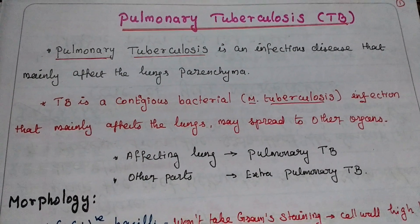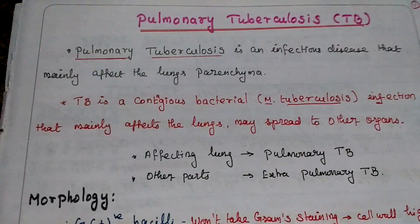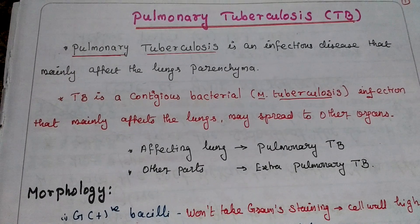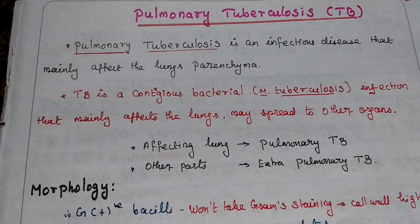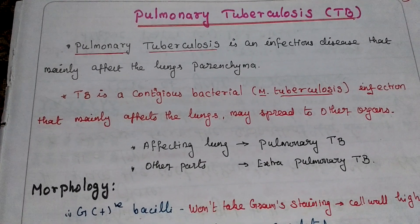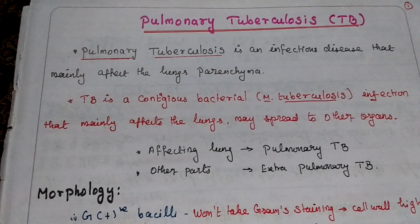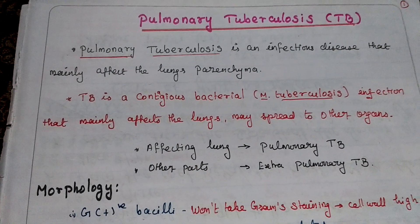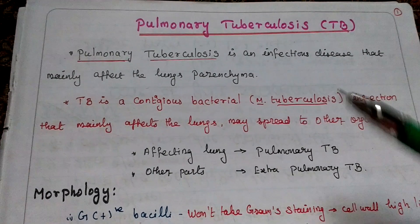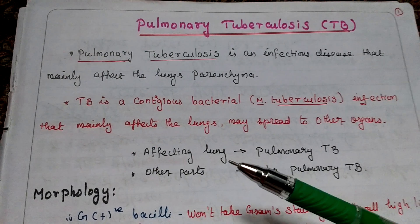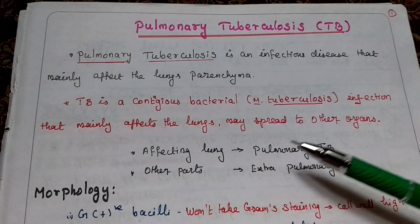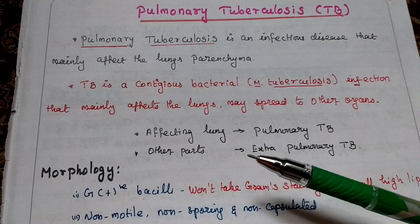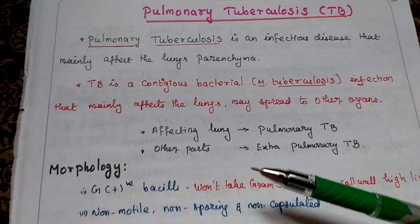Pulmonary tuberculosis is a contagious bacterial infection. The causative agent is Mycobacterium tuberculosis. This infection mainly affects the lungs and can spread to other organs. When Mycobacterium tuberculosis affects the lungs, it is called pulmonary tuberculosis. When it affects other parts of the body, it is called extra-pulmonary tuberculosis.